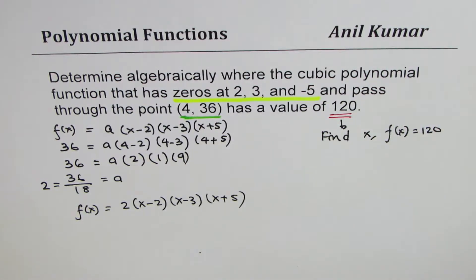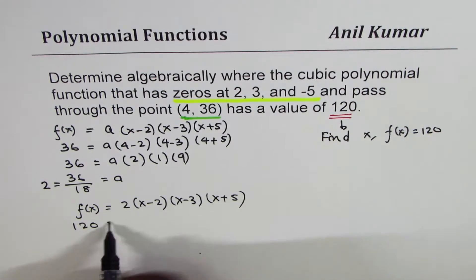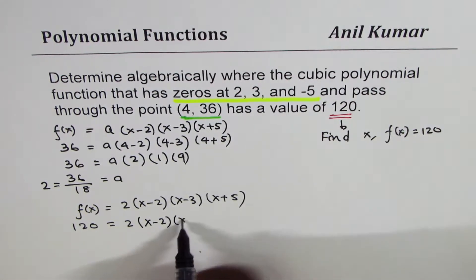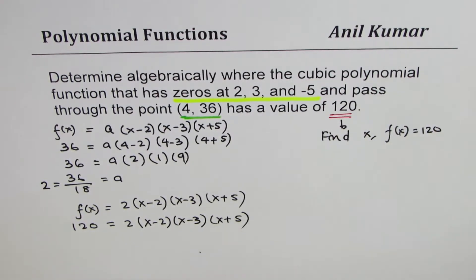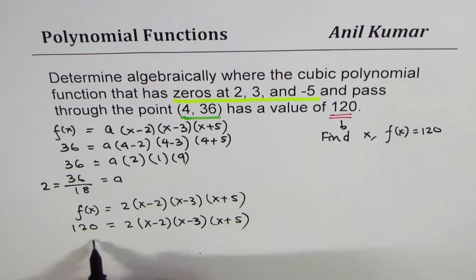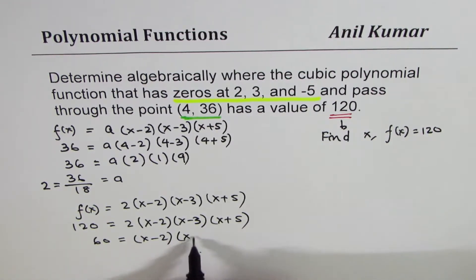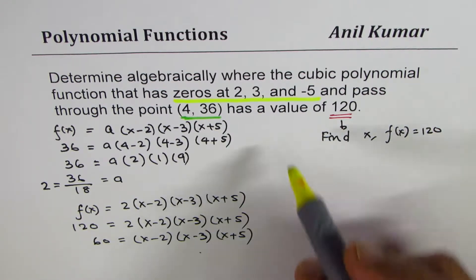So what we can do is, in this particular equation, let's replace f(x) with 120. So we have 120 equals to 2(x - 2)(x - 3)(x + 5). Dividing by 2, you could get 60 equals to (x - 2)(x - 3)(x + 5). So that becomes your equation.